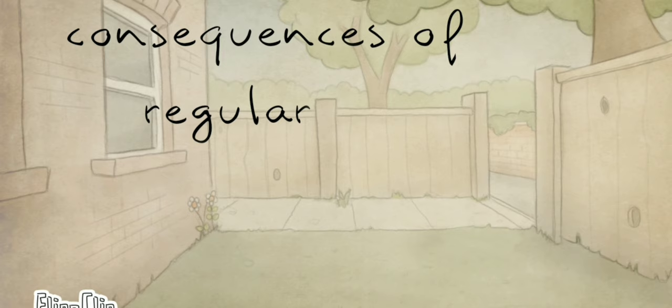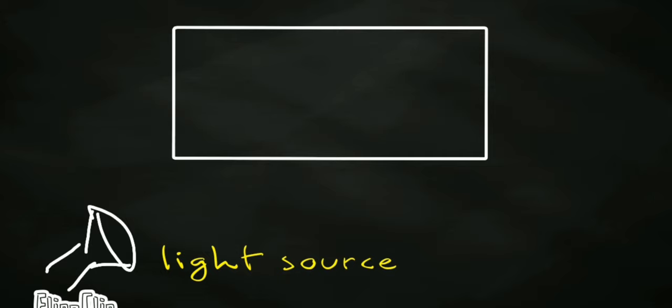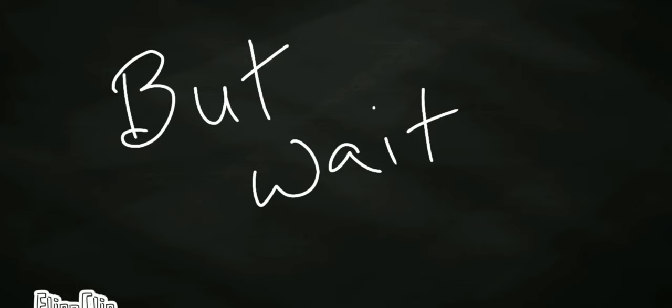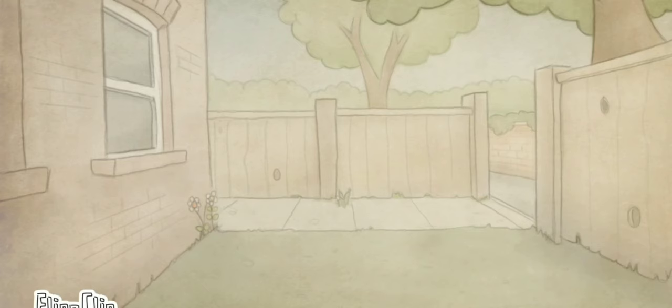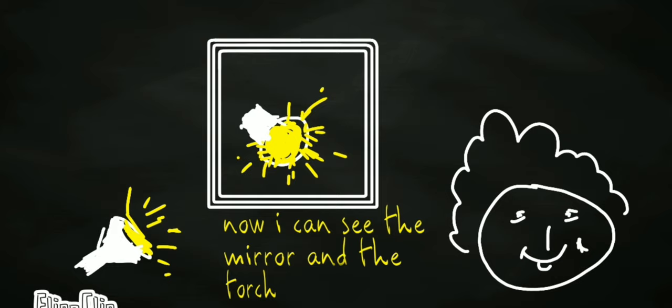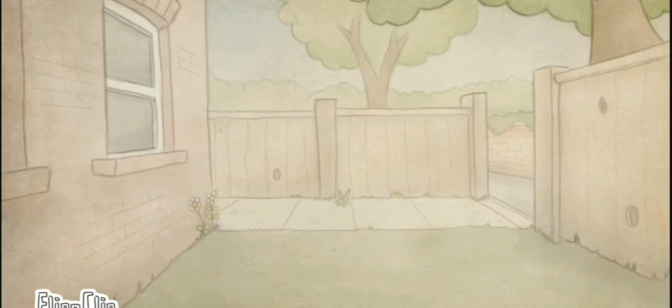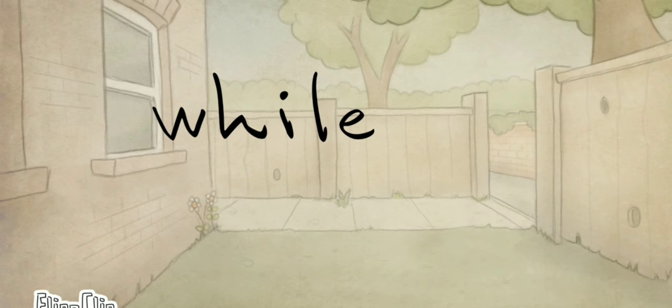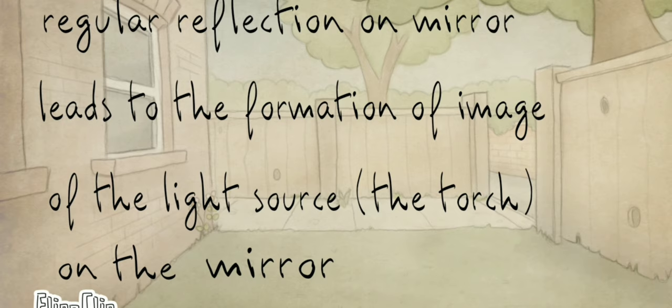Let's consider the consequences of regular and irregular reflection in day-to-day life. Consider a dark room with a wall. If you switch on a torch and light hits the wall directly, the wall becomes illuminated and you can see the wall clearly. However, you cannot see the image or photo of the torch on the wall. But if you replace the wall with a mirror, you can see the mirror illuminated and also see the torch's image — both the mirror and the light source become visible.